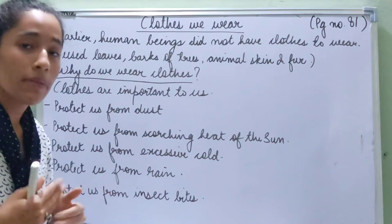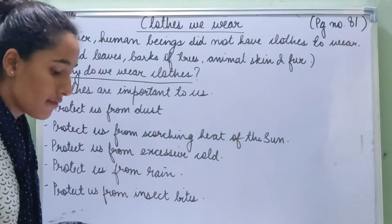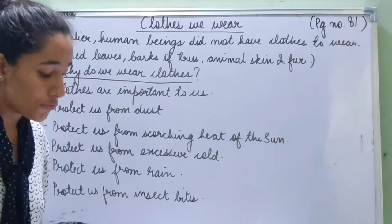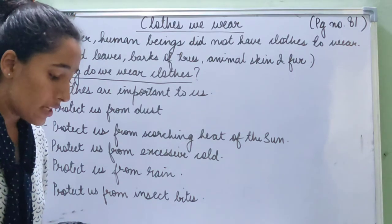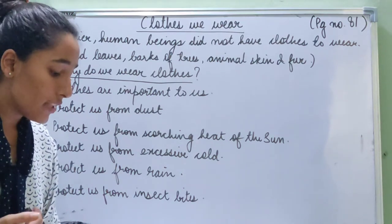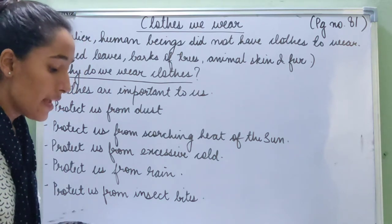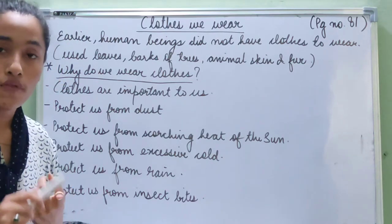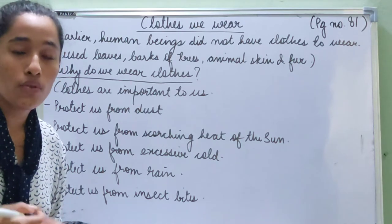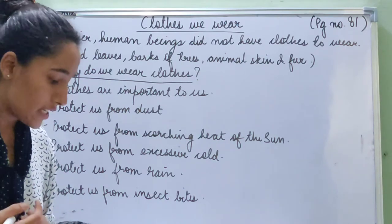Now we are going to learn a little bit more about clothes. In early times, when human beings lived in caves, they did not have clothes to wear. So how did they cover themselves? They covered themselves with leaves, barks of trees, animal skin, and fur. Underline this line. Because they did not have clothes, they didn't know how to sew or make cloth, so they used all these things to cover and protect their bodies.